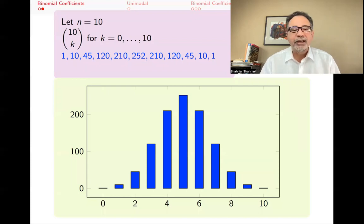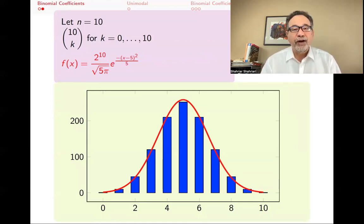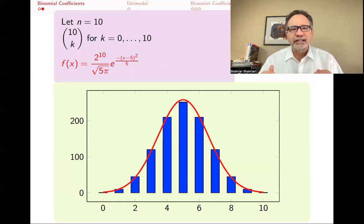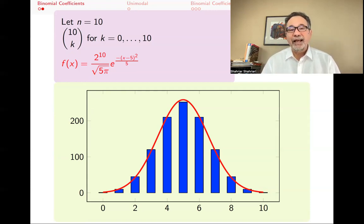One interesting thing is that if you put on top of that bar chart the function f(x) = 2^10 divided by sqrt(5π) times e^(−(x−5)²/5), you get a very good approximation of the values 10 choose k. This is similar to a normal (Gaussian) curve — not quite normalized since the area underneath is not 1 at this point, but if you divide everything by 2^10 you will get a normal distribution.